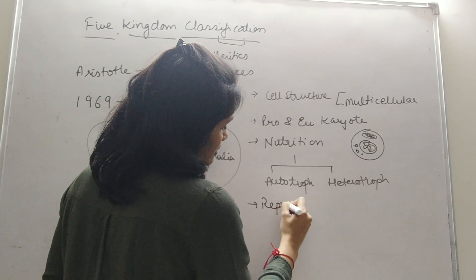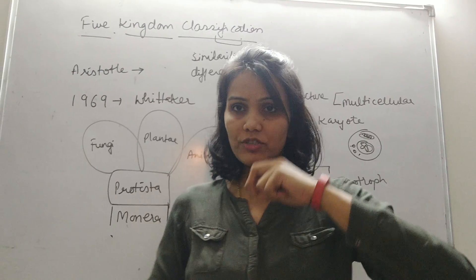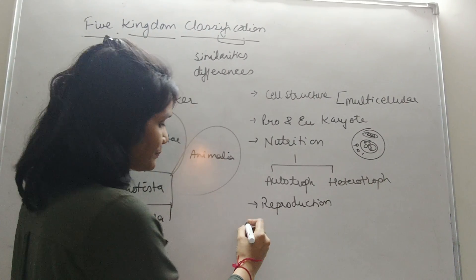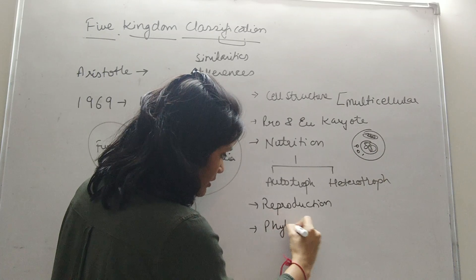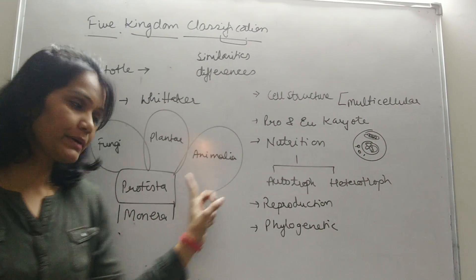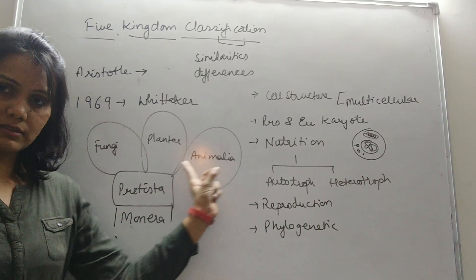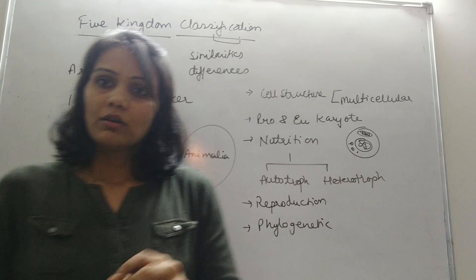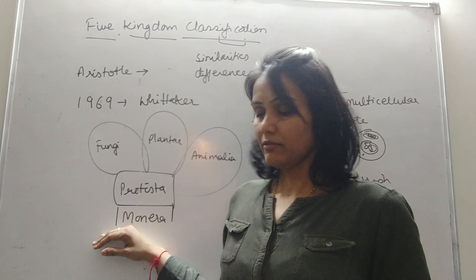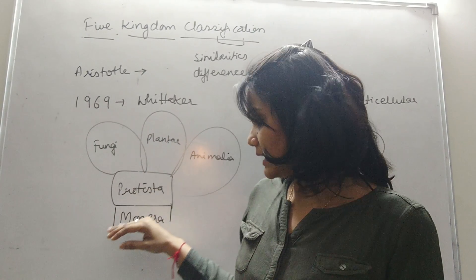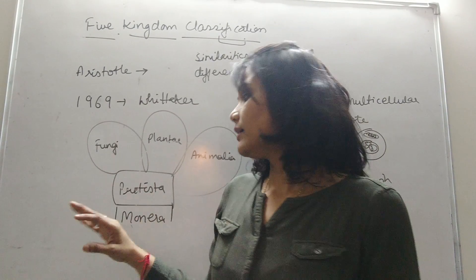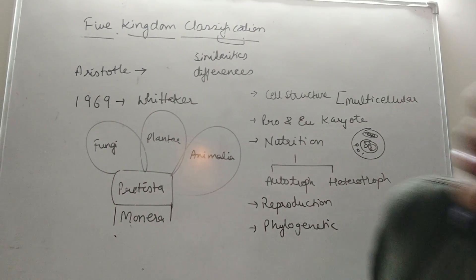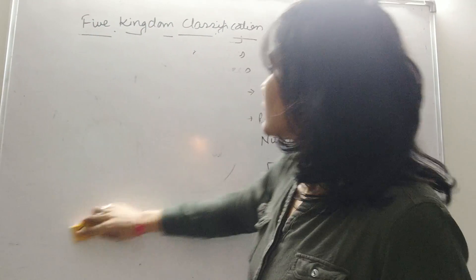The next criterion is reproduction — how they produce offspring to maintain continuity of generations. By asexual method there is no fusion of gametes; by sexual method male and female gametes fuse together to form the zygote. The next criterion is evolutionary relationship — how complex forms of life developed from simpler forms through a gradual process. Whether they are motile or non-motile was also a criterion. So Whittaker classified on the basis of prokaryote/eukaryote, unicellular/multicellular, mode of nutrition, reproduction, and evolutionary relationship.